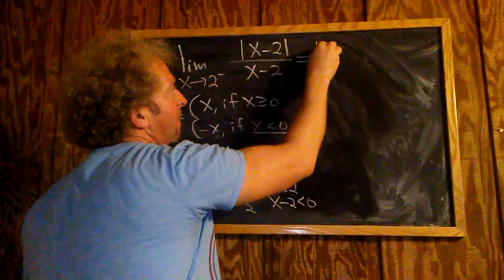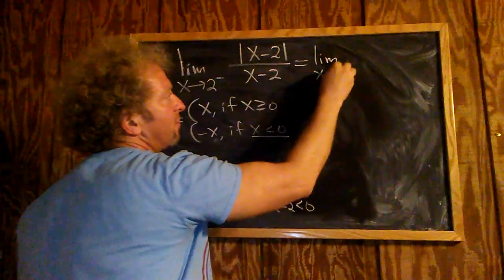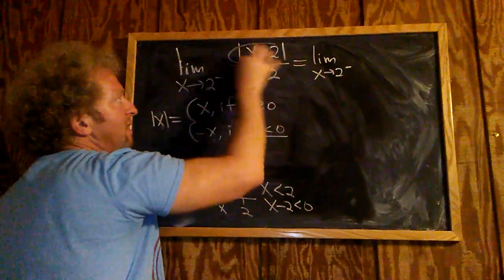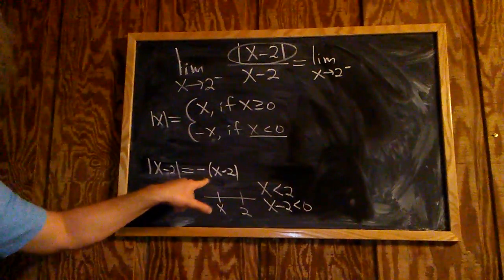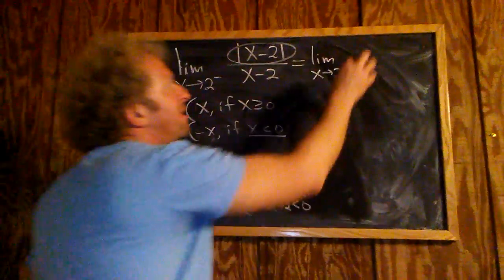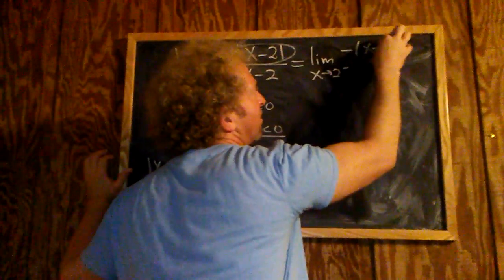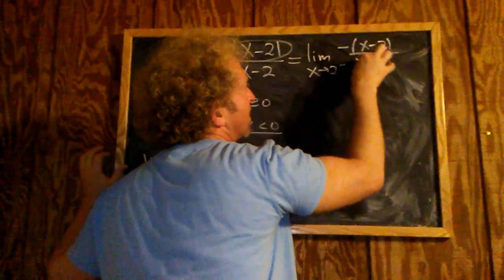And this whole top piece can now be replaced with minus (x minus 2). This is minus (x minus 2), and the bottom still has x minus 2.